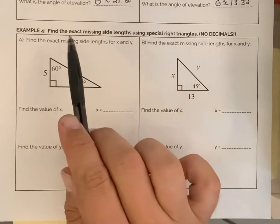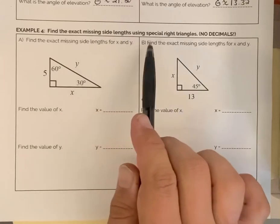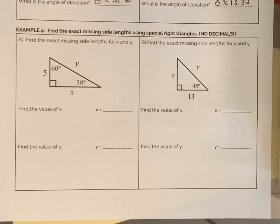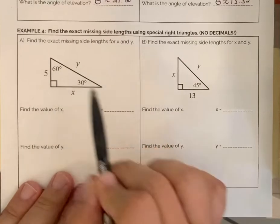For example four, you have to find the exact missing side length using special right triangles. It says no decimals. If you remember here, this is a 30-60-90 triangle.